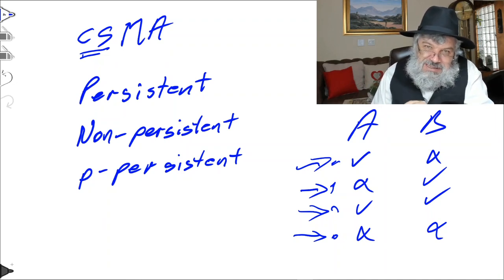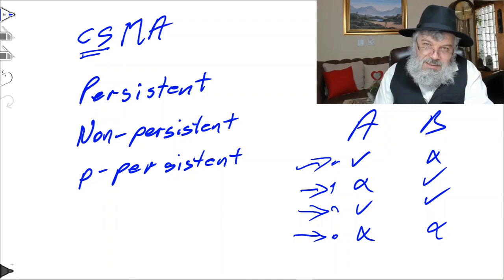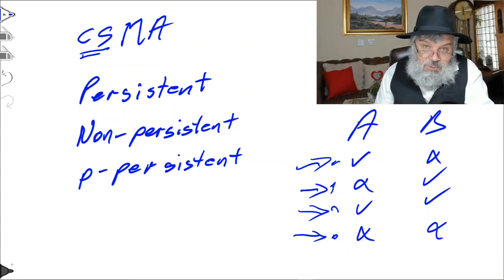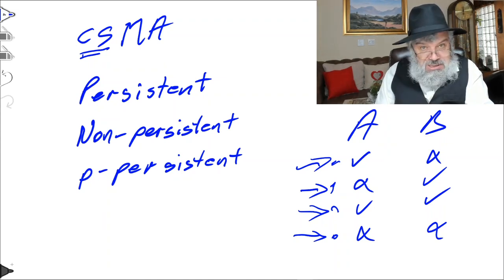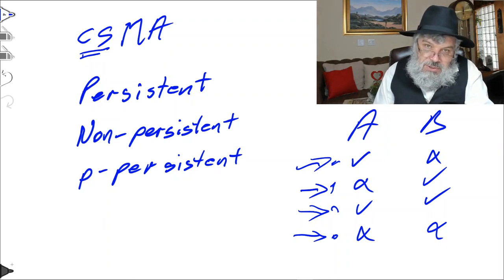As an exercise: if we have 0.3-persistent and two machines are waiting, what is the likelihood they will successfully transmit? Or if we have 0.5-persistent and three stations are waiting on the medium, all waiting for an opportunity then making their random choice, what is the outcome? Go and work through those scenarios.